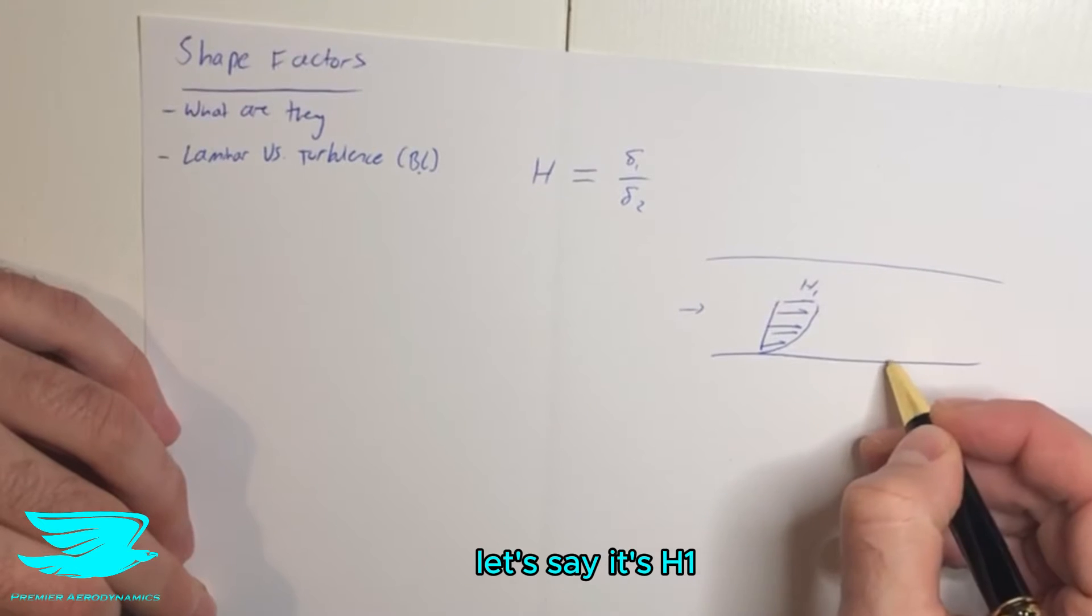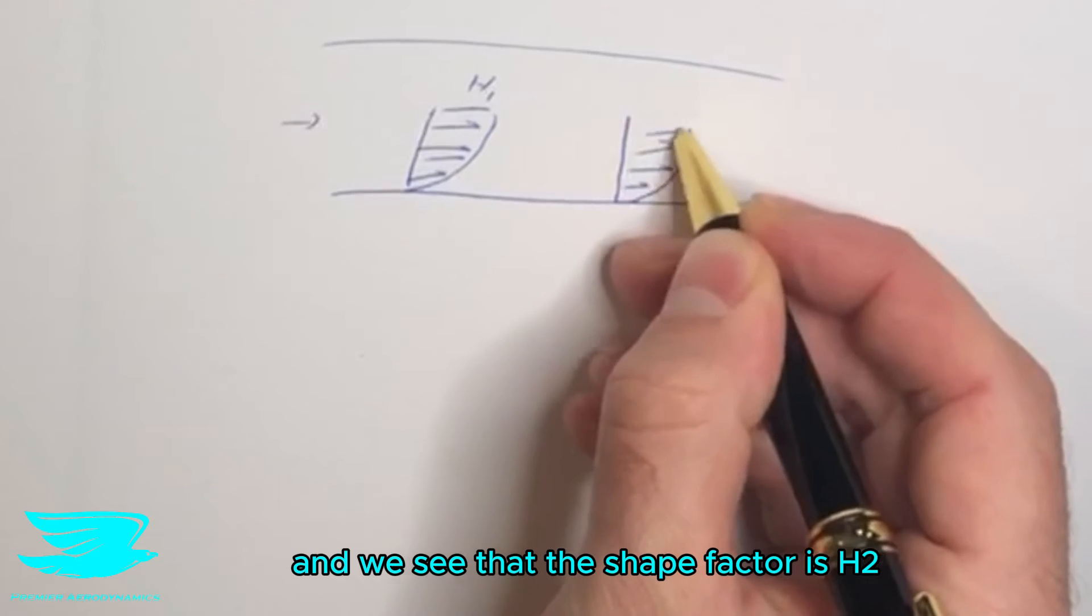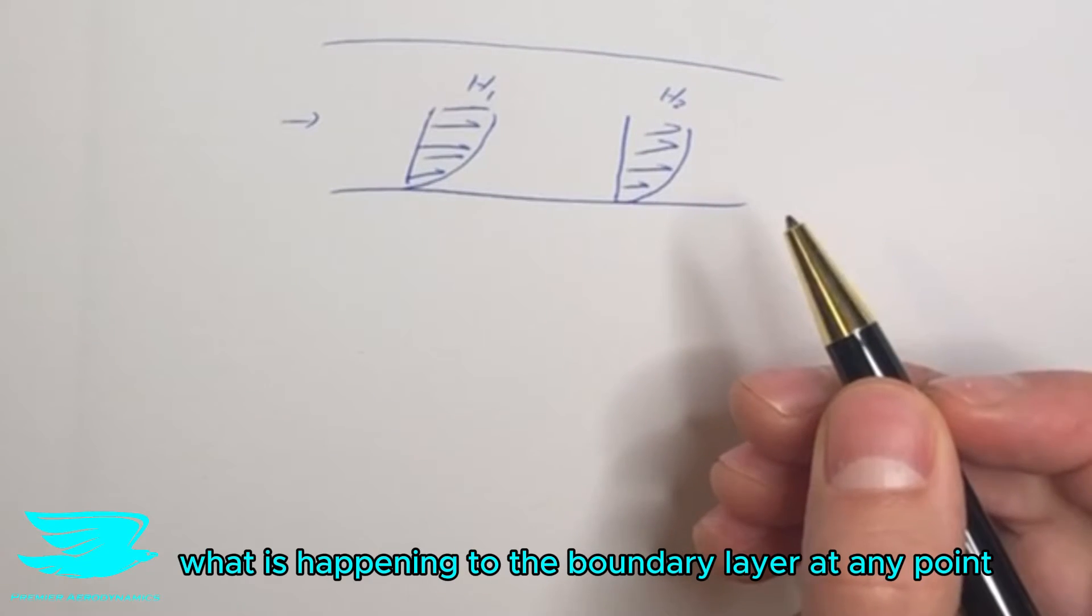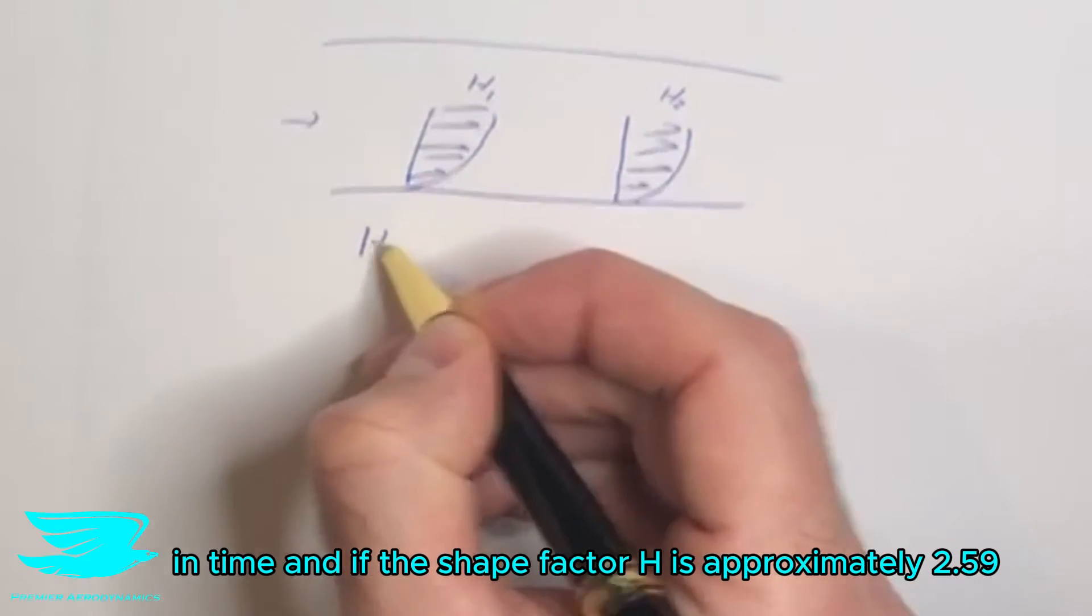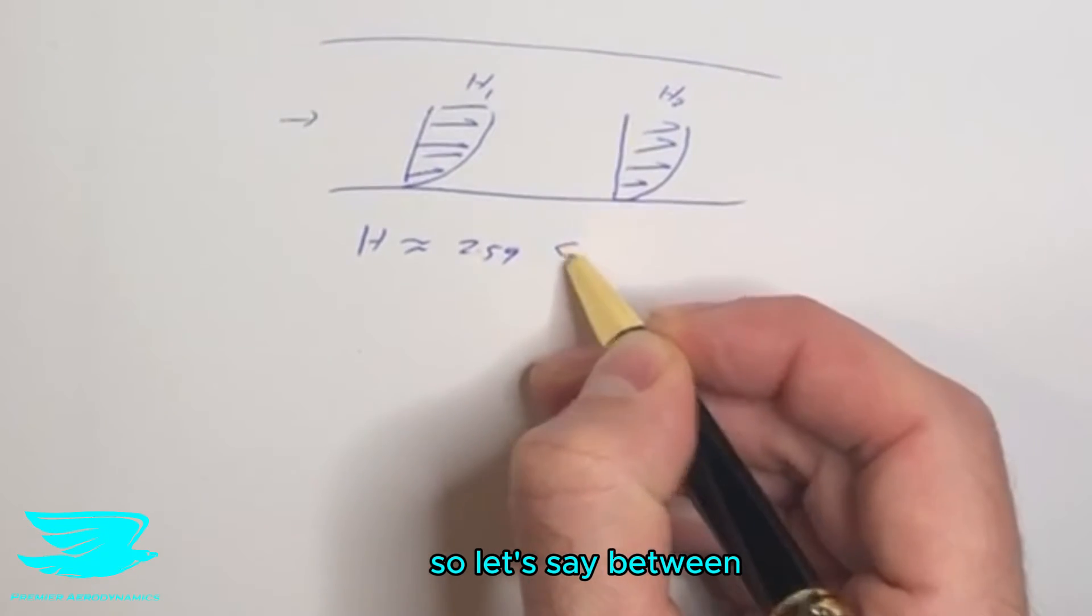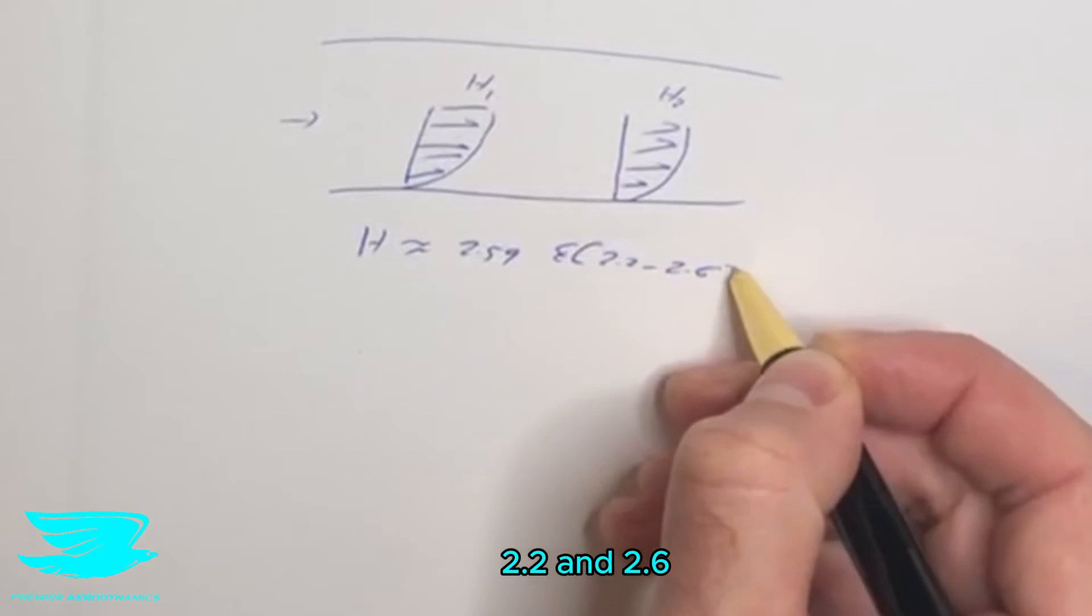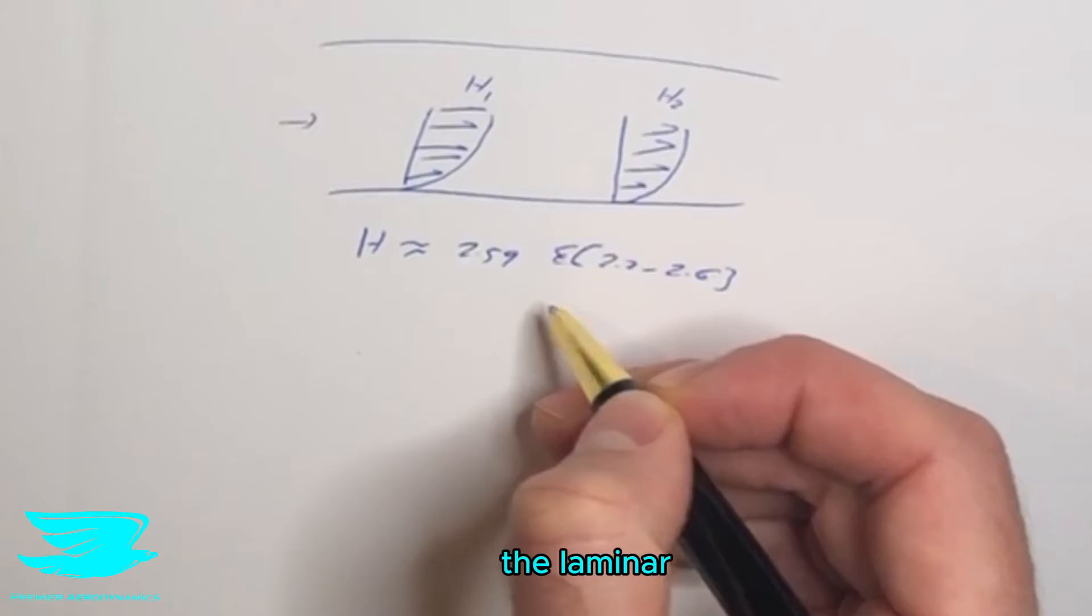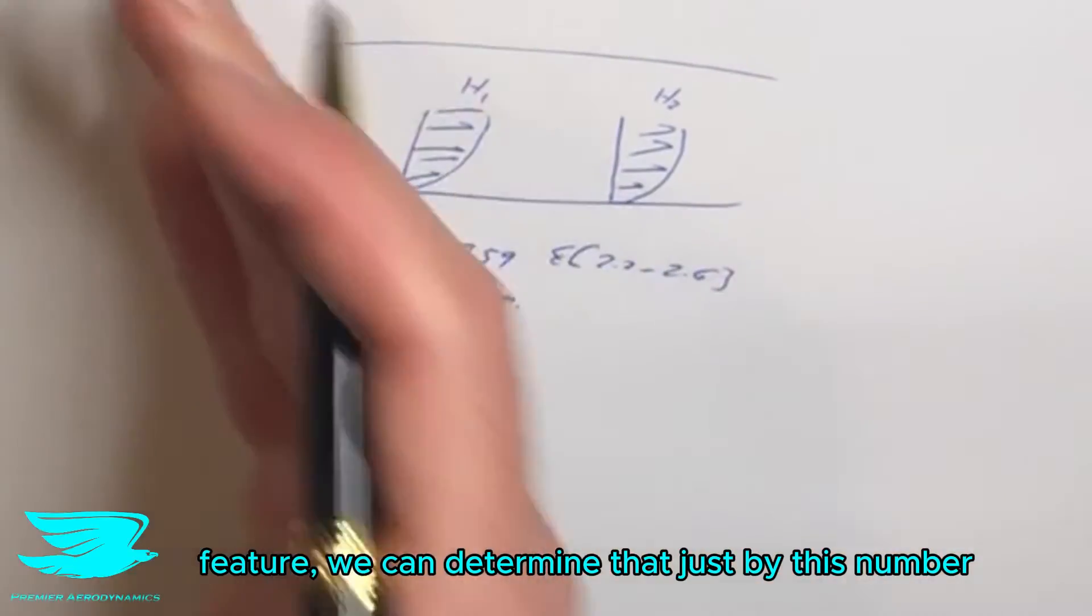Let's say it's H1. Then later on, we calculate it again, and we see that the shape factor is H2. Depending on what these numbers are, we can determine what is happening to the boundary layer at any point in time. And if the shape factor H is approximately 2.59, so let's say between 2.2 and 2.6, this tells us the boundary layer is most likely laminar, which is a really cool feature. We can determine that just by this number.